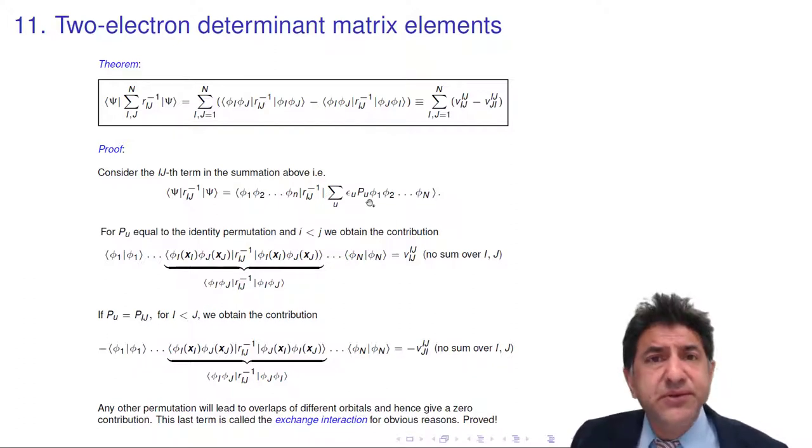Consider P u equal to the unit permutation. Fantastic. That disappears. We have phi 1 with phi 1, phi n with phi n. And somewhere in the middle we have a phi i, x i, phi j, x j with a phi i, x i, phi j, x j. And we have in between here one on r i j, r i j to the minus one. This is a double integral over x i and x j.